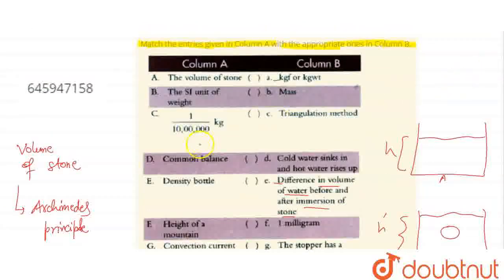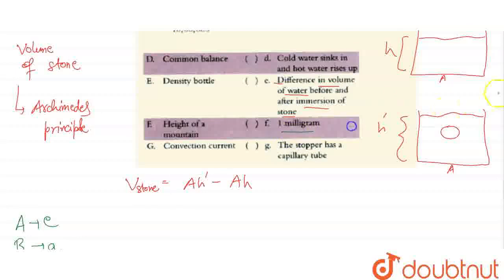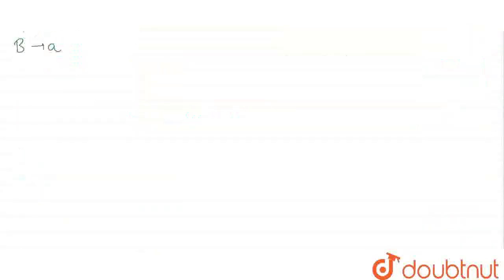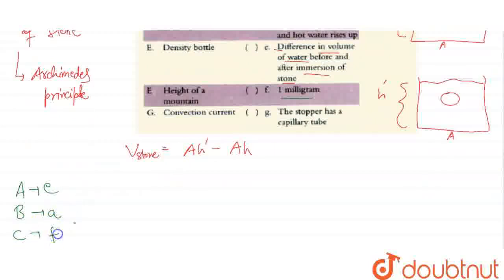And 1 by 10 to the power 6 kg. I know 1 kg has 1000 grams, right. So 1 gram has how many milligrams? 1 gram has 1000 milligrams. Basically what's being asked is that 1 milligram is 1 by 10 to the power 6 kg, so C's answer is F.